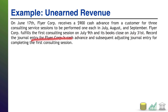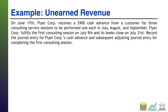We need to record the journal entry for the cash advance and the subsequent adjusting journal entry for completing the first consulting session. First, on June 17th, we are receiving cash of $900. We have not done the job yet — we owe the job — so we record unearned revenue of $900.